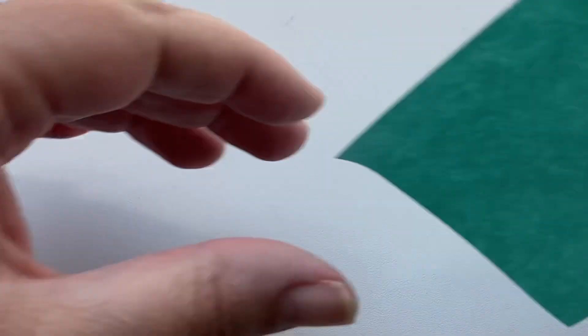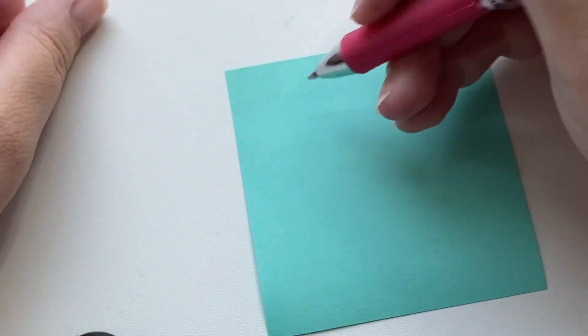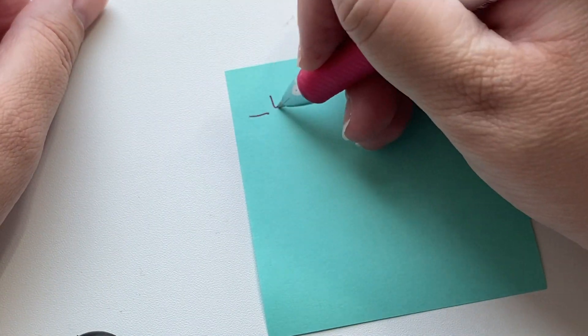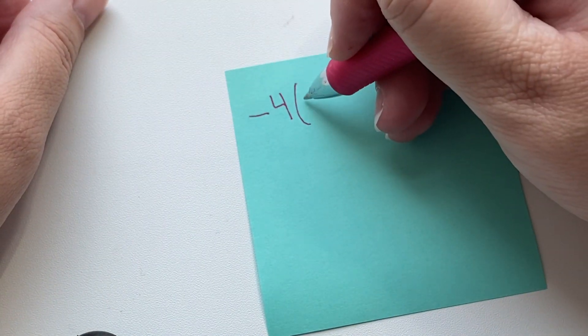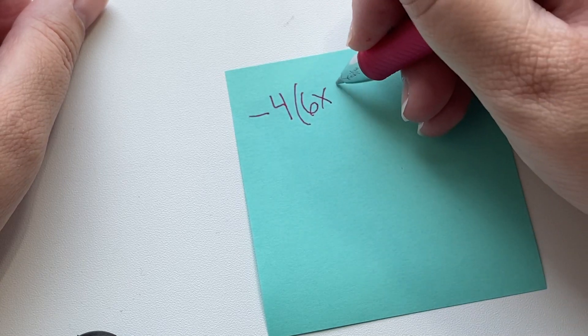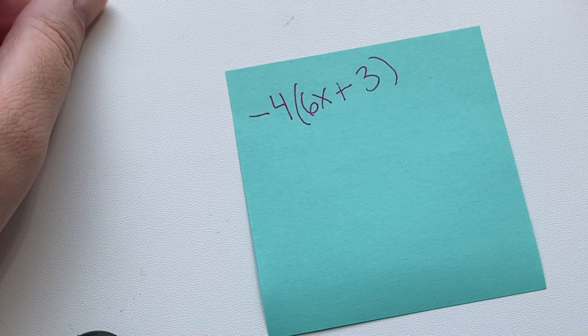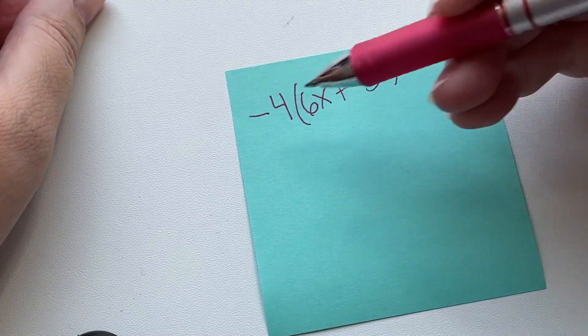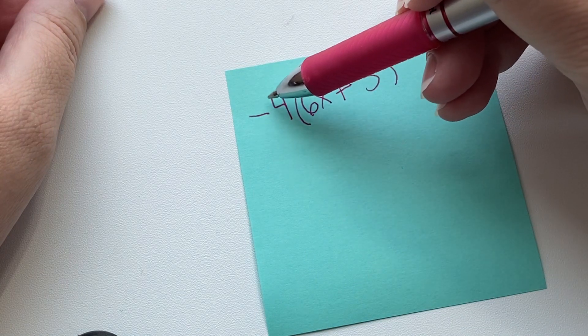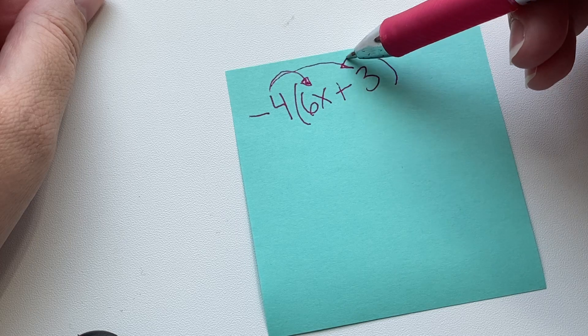Here we go. Okay, so here's our next example. Negative four times, what number should we use? Six x plus three. Why do I keep using three? I don't know. I must just love three. Okay, once again, we're multiplying the negative four times the 6x, and then negative four times the positive three.